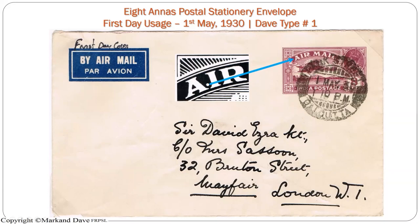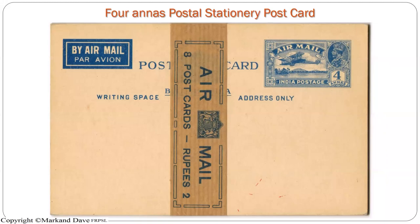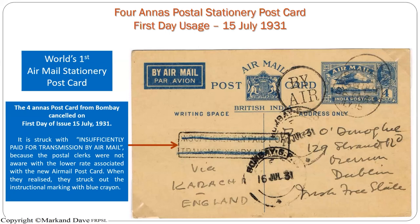Here we see the first day cover, again showing the variety. The first day usage of the eight-anna postal stationery was 1st May 1930. We also had the postcard — the four-anna postcard — which is the world's first airmail stationery postcard. I was not able to find any errors in this postcard. But here we see the first day usage of the world's first airmail stationery postcard, sent from Bombay. By mistake they applied an 'insufficiently paid for transmission by airmail' marking, but when they realized this was the new reduced-rate postcard, they struck it out with blue crayon and decided the postcard was good to go.